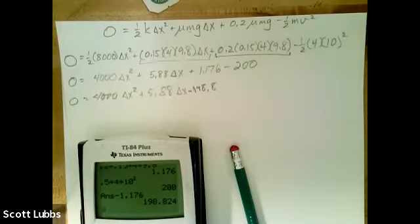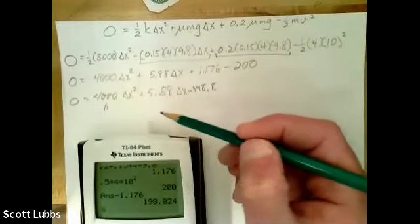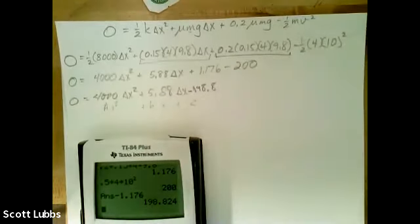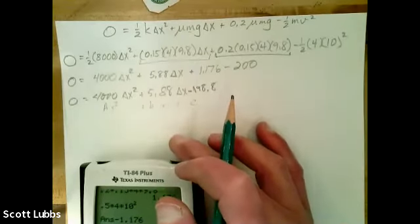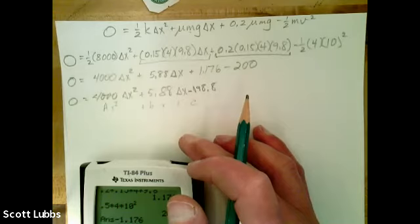Quadratic formula calculator. So coefficient a is - here's a, here's a x squared plus b x plus c. So a is 4000, coefficient b is 5.88, and c is negative 200. Calculate. Oh nice, I got two answers. I got 0.224 and negative 0.222. Nice.